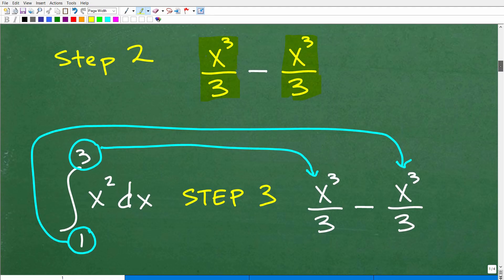So step 3, we have to kind of go back to this original integral. Okay, this is this original form of this problem. And let's talk about this 1 and 3. So what we're going to do is we're going to put the 3, we're going to plug in 3 for this x right there. Okay, and then this 1, we're going to plug in for this x right there.